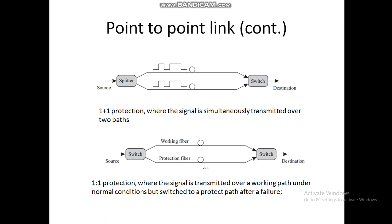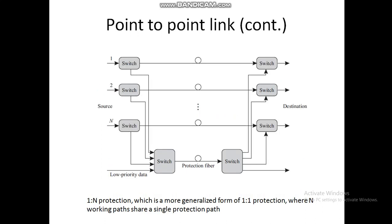This low priority traffic must be discarded if the working fiber is cut. Another advantage is that 1:1 protection can be extended to share a single protection fiber among many working fibers. A single protection fiber can be shared by N number of working fibers or sources and destinations. This is 1:N protection, which is a more generalized form of 1:1 protection where N working paths share a single protection path.